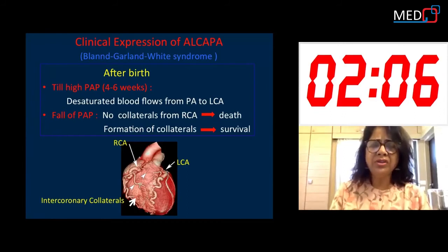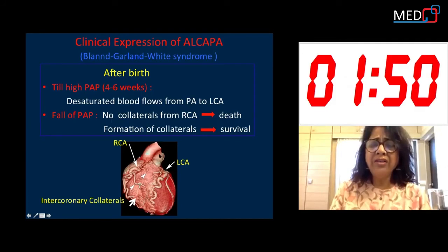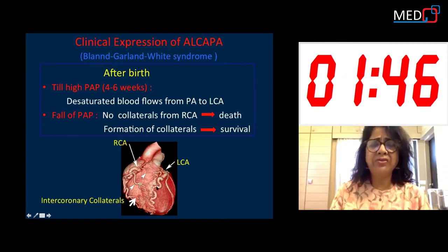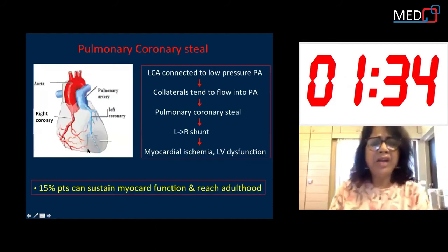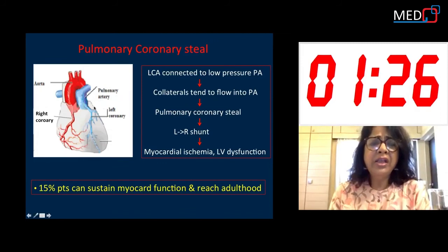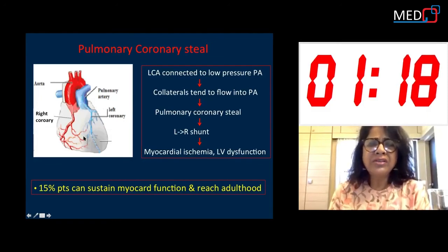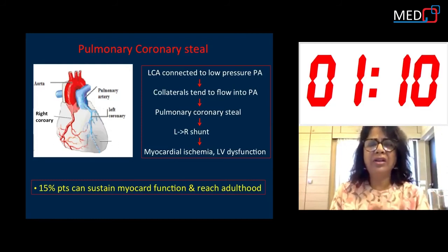The LV, with its high oxygen demand, still suffers from ischemia, but at least receives some blood. After 6 weeks, as pulmonary artery pressure falls, if there are no collaterals, the left coronary artery system receives blood neither from the pulmonary artery nor from the right coronary artery, and death occurs. If collaterals form, survival is possible. However, even with collaterals, there is a phenomenon called pulmonary coronary steal — because the left coronary artery is connected to the low-pressure pulmonary artery, collateral flow tends to go to the pulmonary artery rather than the high-resistance myocardial vessels.